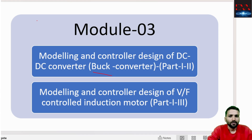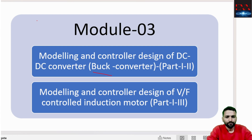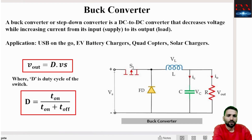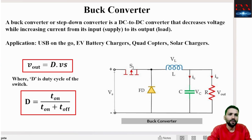In the first part we will be learning about the theory behind the buck converter and what are the control schemes which can be employed for controlling the buck converter output voltage. What is the buck converter? A buck converter or a step-down converter is a DC-to-DC converter — it takes DC as input and gives DC as output — that decreases the voltage while increasing the current from its input to its output load.